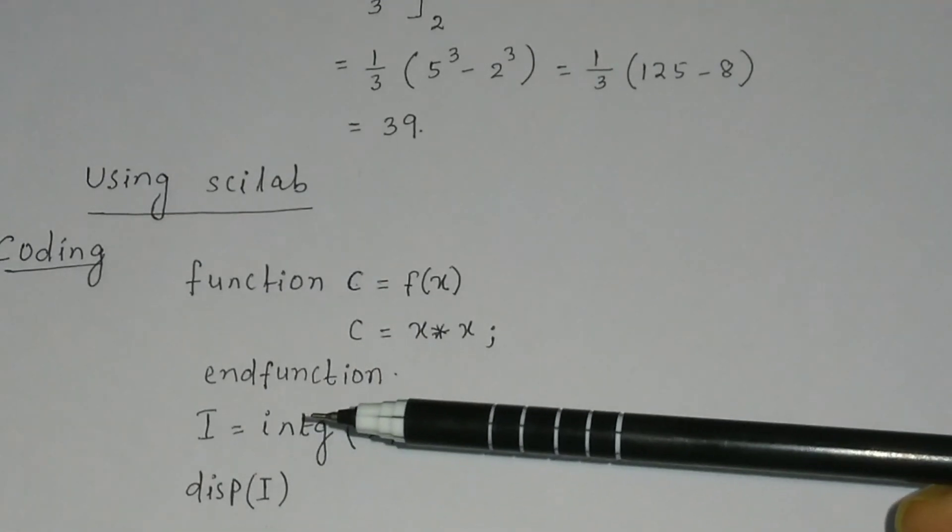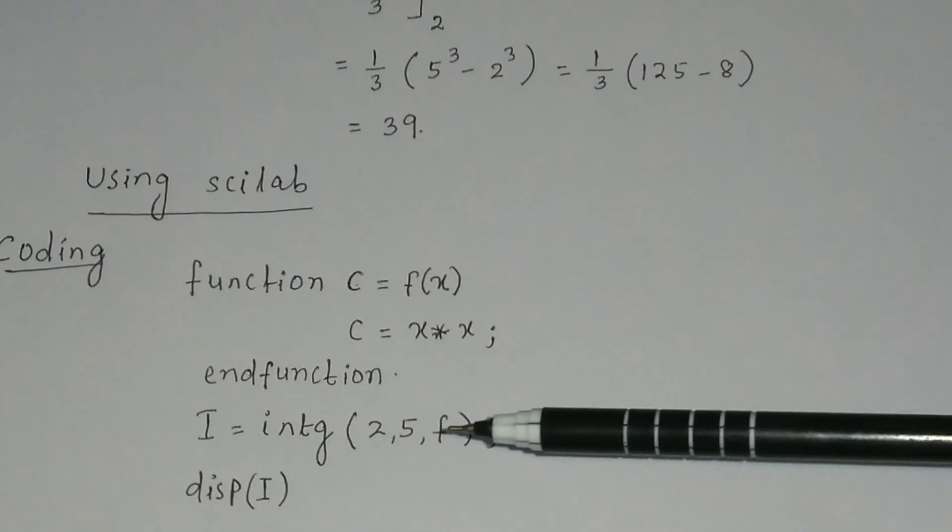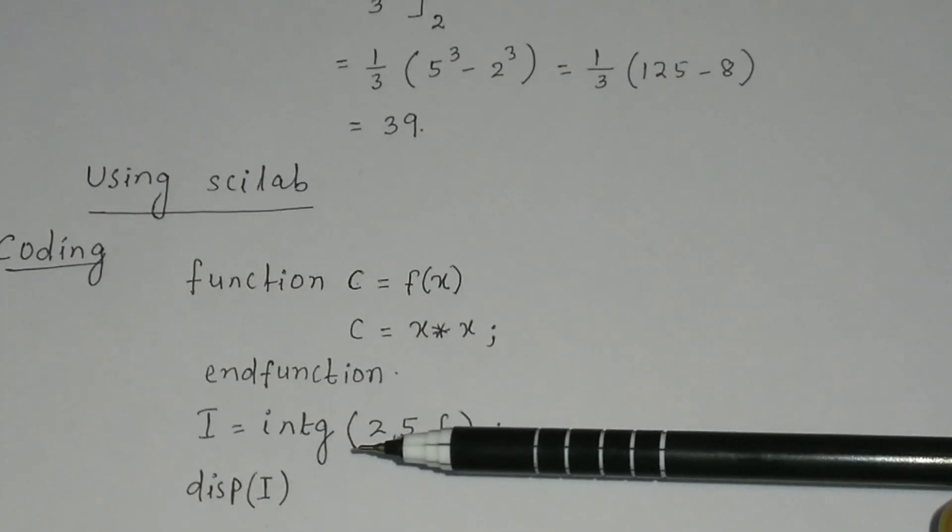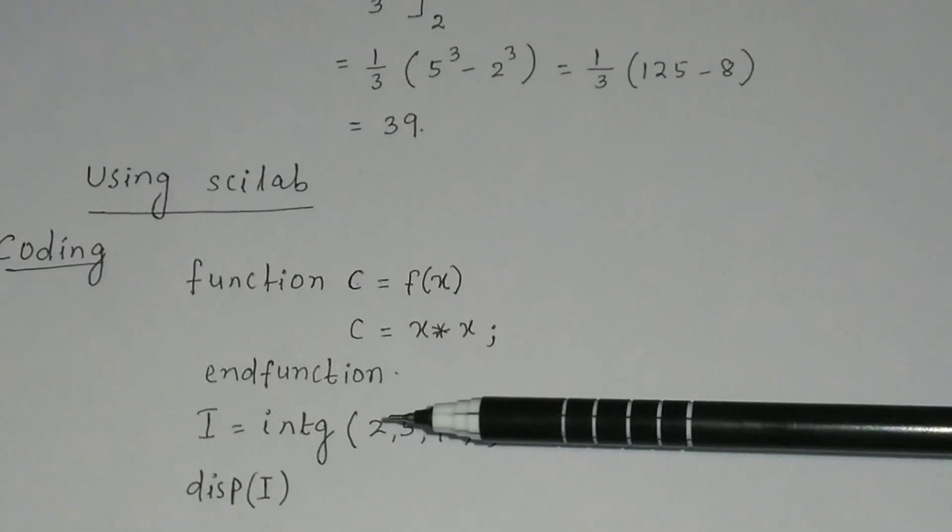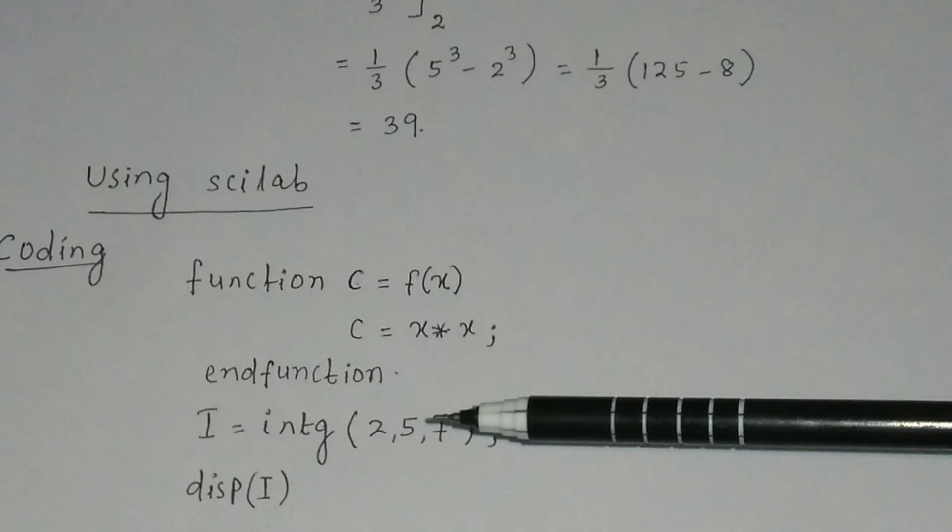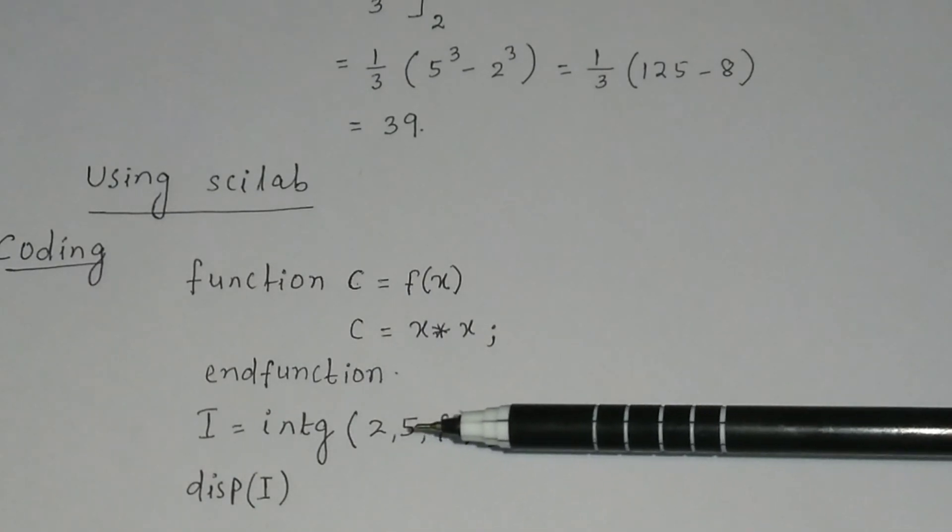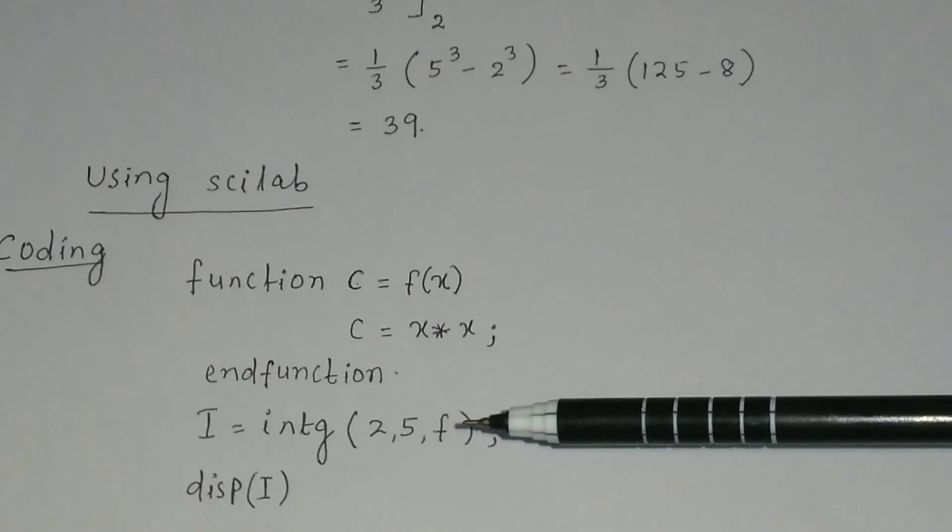Then you have to write i equal to intg in bracket 2, 5, f. Here intg is the inbuilt function in Scilab. That is the integration function. Then in the bracket you have the limits. Here 2 and 5 are the limits. From 2 to 5 you have to integrate. And f is the function.